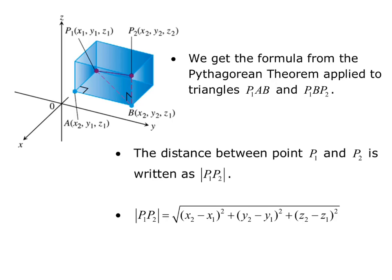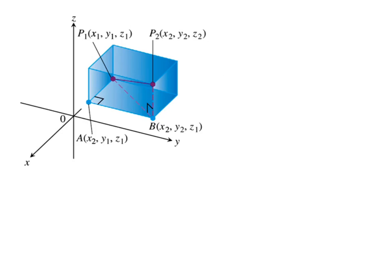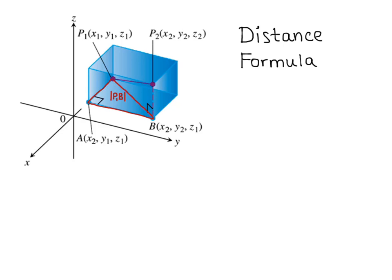Now let's look at how we actually get this formula. We have the same figure as on the last slide, and we want to derive the distance formula. Looking at the triangle formed by P1, A, and B: P1 is (X1, Y1, Z1), A is (X2, Y1, Z1), and B is (X2, Y2, Z1). The hypotenuse of that triangle is the length of P1B.